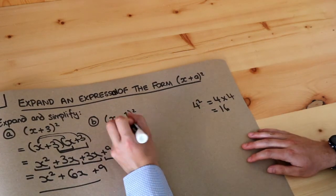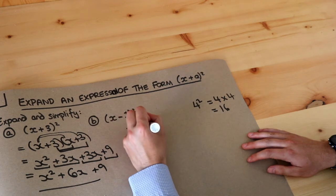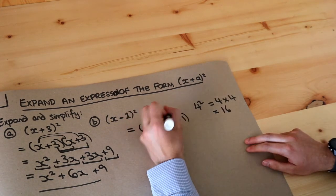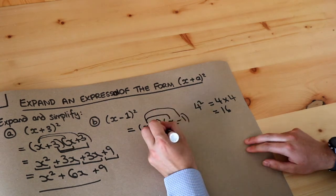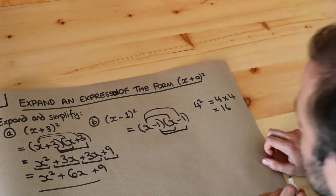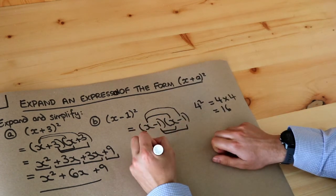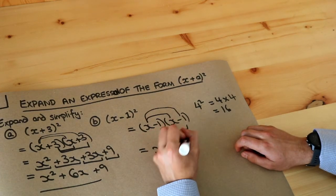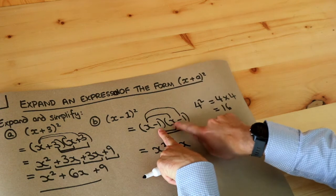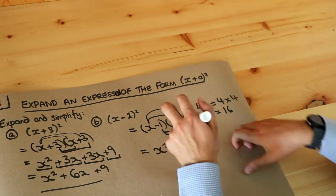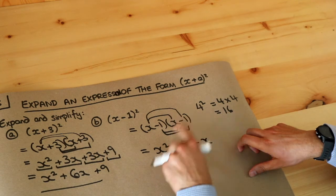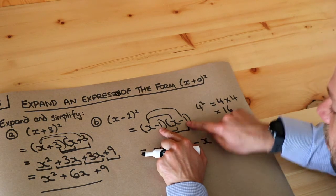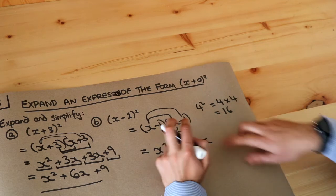Now for the second example: (x − 1) squared means that bracket multiplied by itself. We do x multiplied by x giving x squared, then x multiplied by minus 1 giving minus x. Then minus 1 gets multiplied by each thing in the second bracket: minus 1 times x is minus x, and minus 1 times minus 1 — here you have to be careful, negative times negative is positive — so it's positive 1.